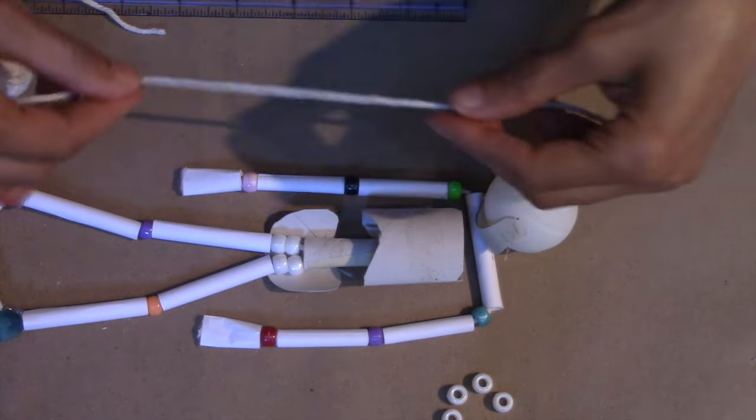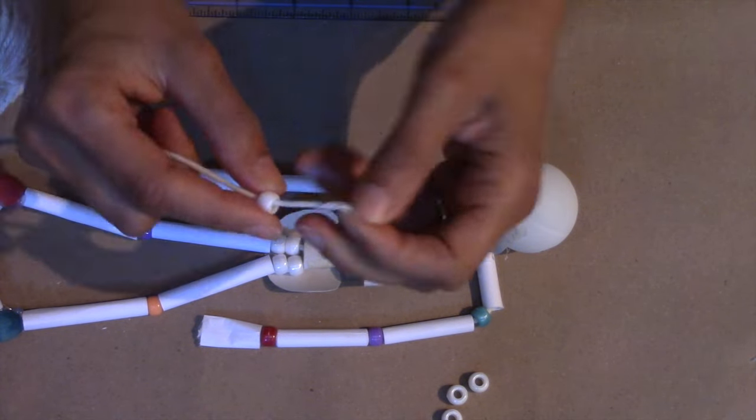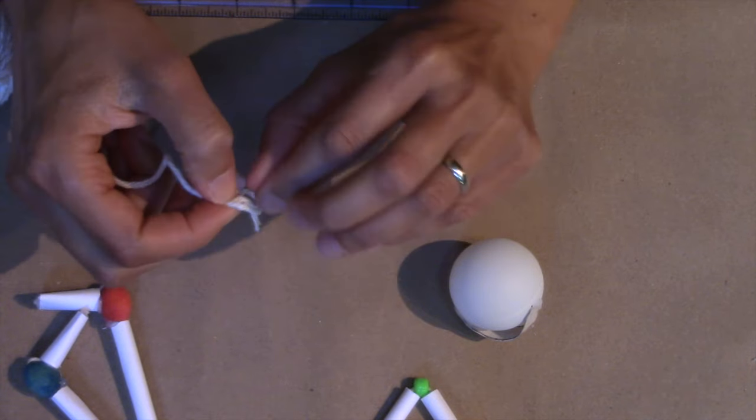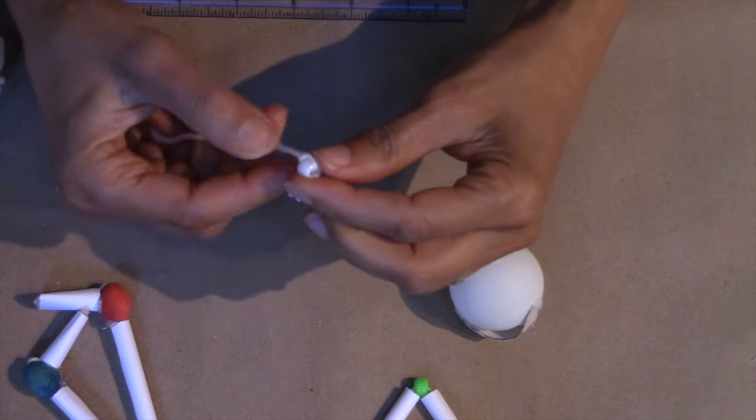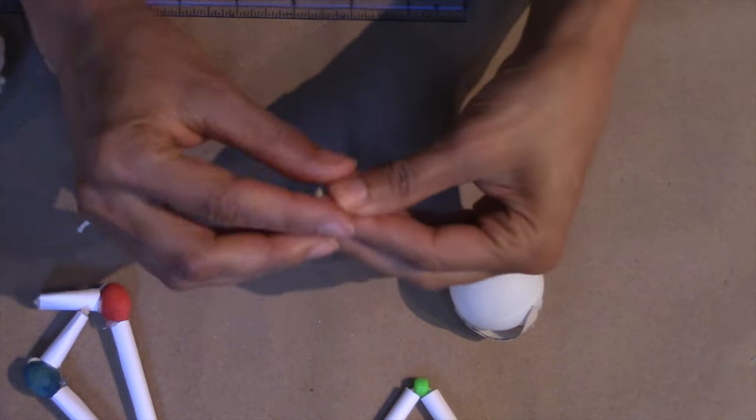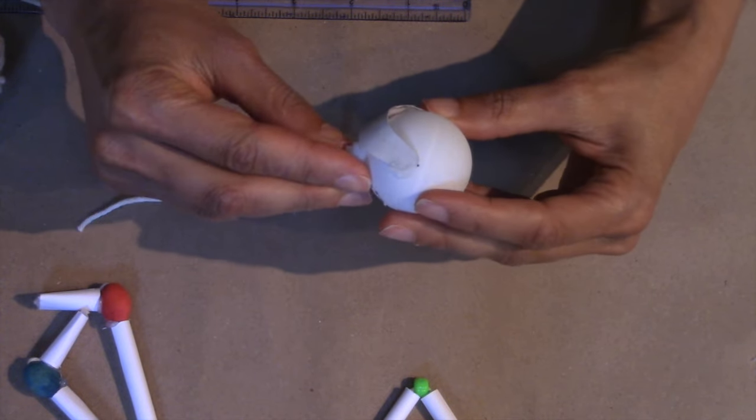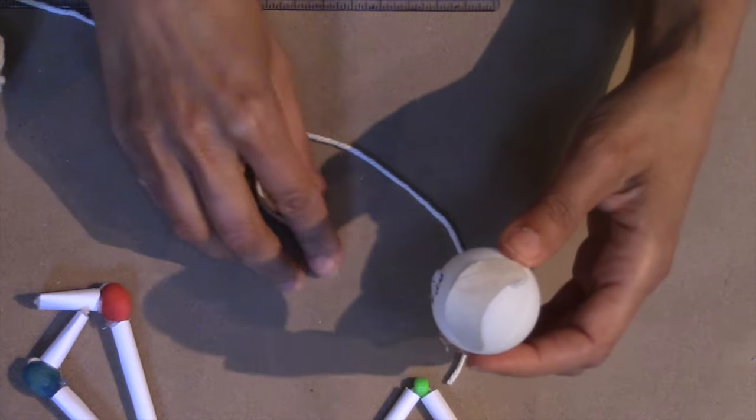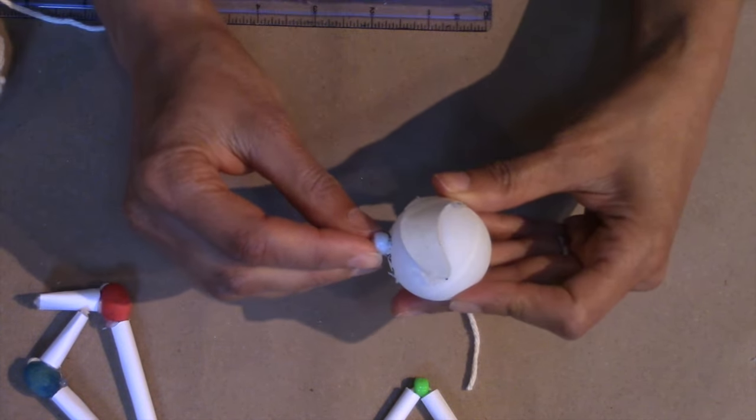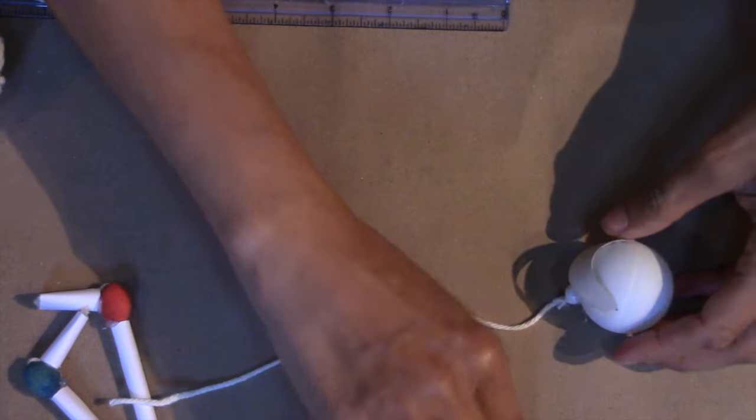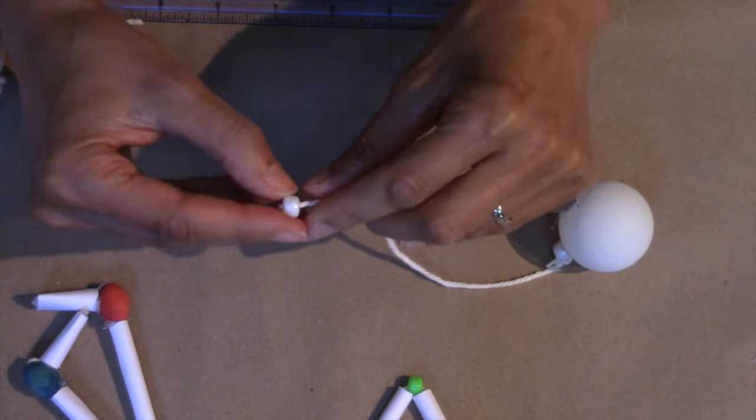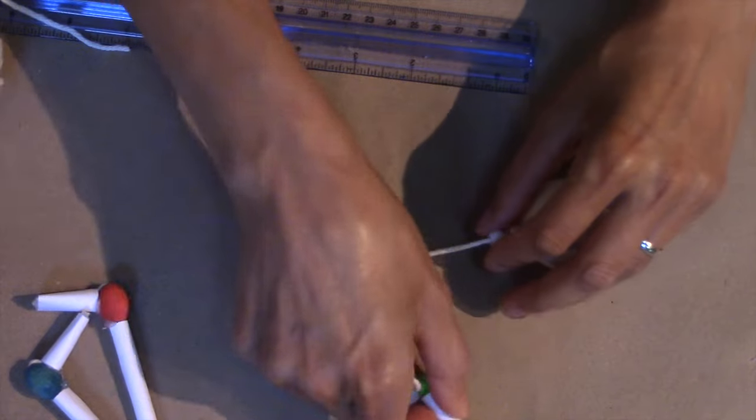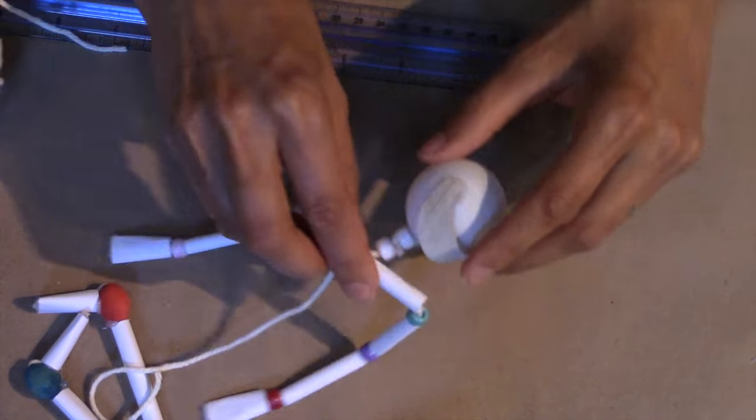To attach the head, start with a short piece of cord. Tie it onto one of your plastic beads. Then glue the bead to the bottom of the ping pong ball. I slid on one more bead, but I would suggest adding two beads instead. This will become the neck. Tie the cord around the center 2 inch paper bead on your arms.